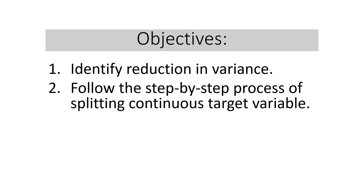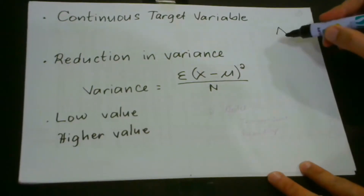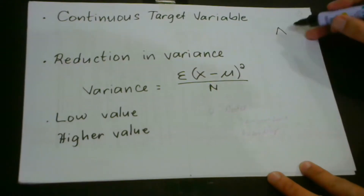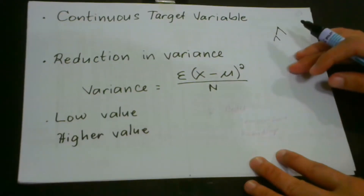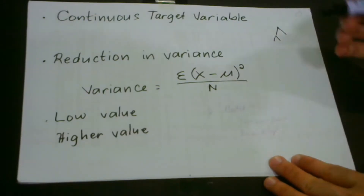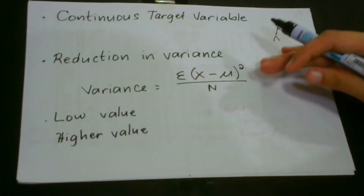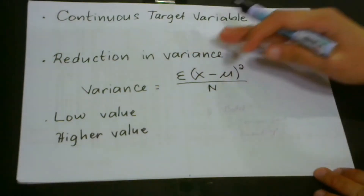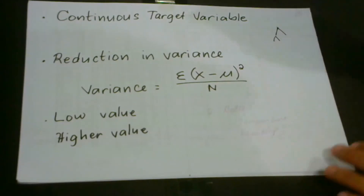At the end of the lesson, you are expected to identify reduction in variance, follow the step-by-step process of splitting a continuous target variable, and appreciate the use of reduction in variance in a decision tree algorithm. In a decision tree, it is always very important to understand how to split our nodes. In choosing what splitting strategy to use, it is always very important to identify what kind of target variable we have. We're going to start with a continuous target variable and identify what splitting strategy to employ.